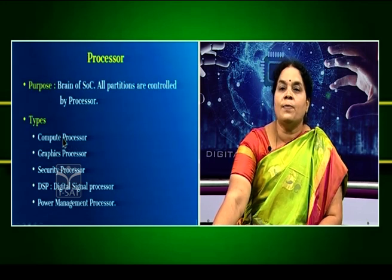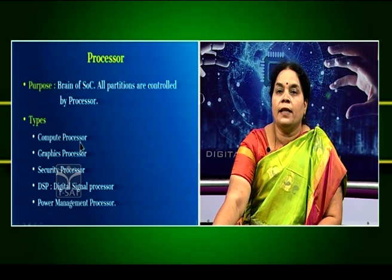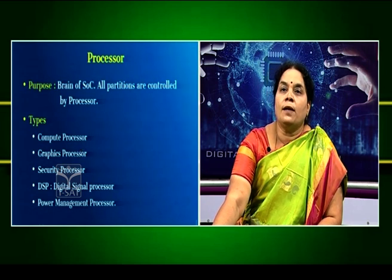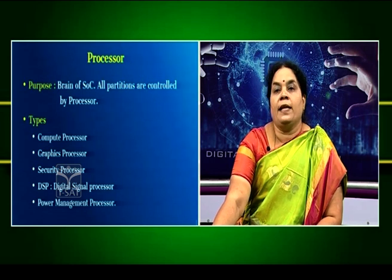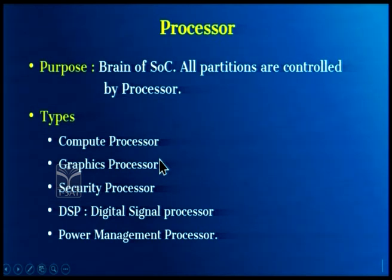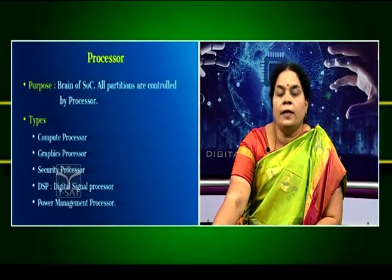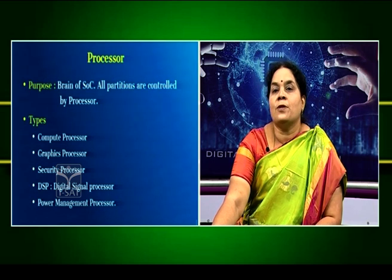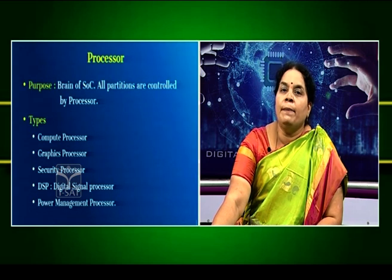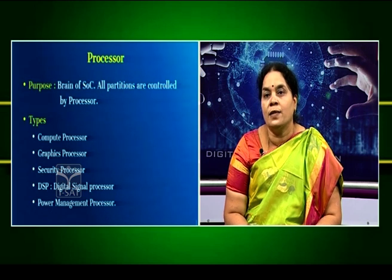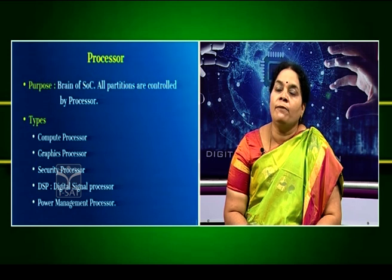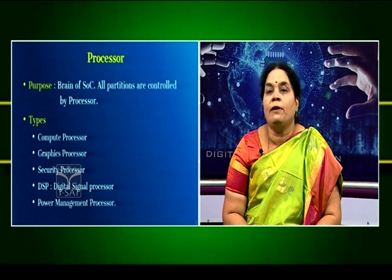The first type of processor, based on the application being targeted, is the compute processor. Compute processors are primarily targeted to perform particular tasks which are not application-specific. They handle multiple tasks and control all the other components on the system. All the types of processors listed can be present on a single chip based on requirement. Instead of handling everything in one combined processor, we partition them based on features, which makes SOC development faster.